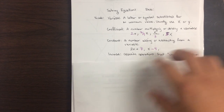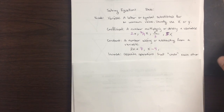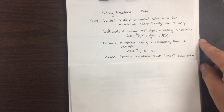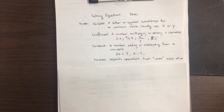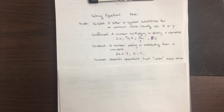Next is an inverse — opposite operations that undo each other. Everything we do in algebra we can undo, and the way we do that is with something called an inverse. An inverse is like an undo button on a calculator or computer — it's the opposite operation.